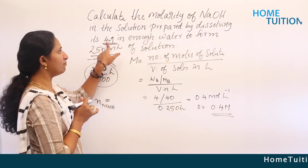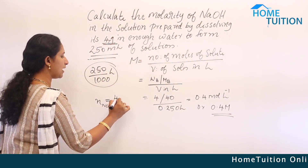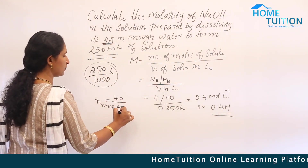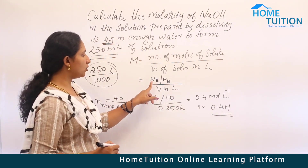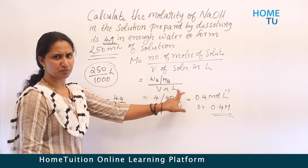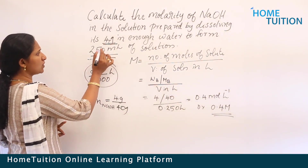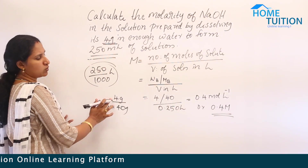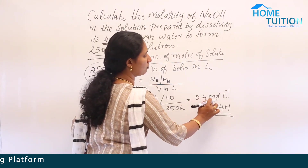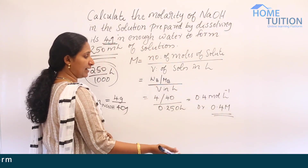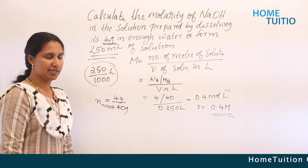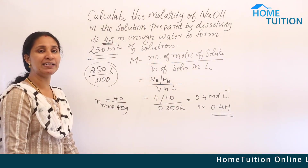So WB by MB equals 4 by 40. Volume in liters is 0.250. Dividing gives 0.4 moles per liter, or 0.4 M. Capital M represents molarity. This is how we find molarity: number of moles of solute divided by volume of solution in liters.